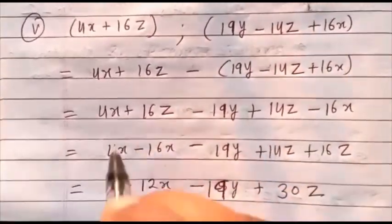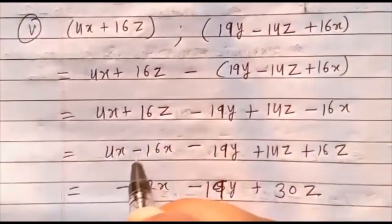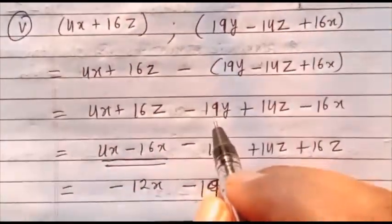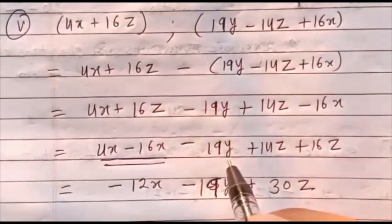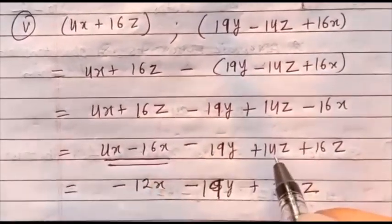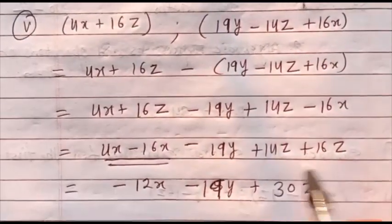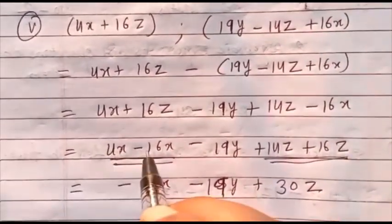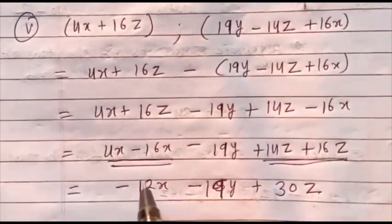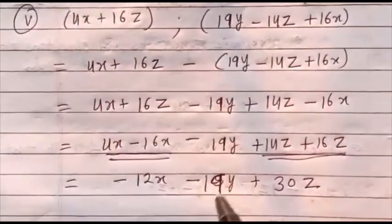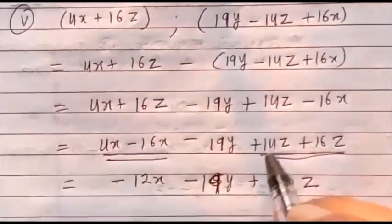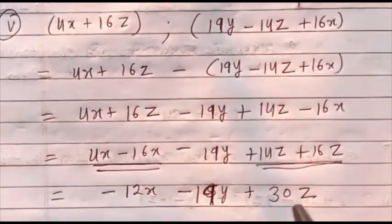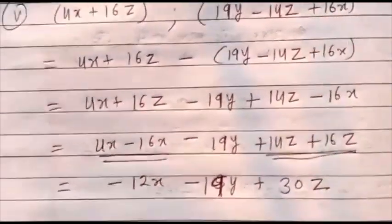Collect the like terms: 4x and minus 16x are like terms. Write minus 19y as it is. Plus 14z plus 16z are like terms. Now 4 minus 16 is minus 12x. Minus 19y stays. 14 plus 16 is 30z. So the answer is minus 12x minus 19y plus 30z.